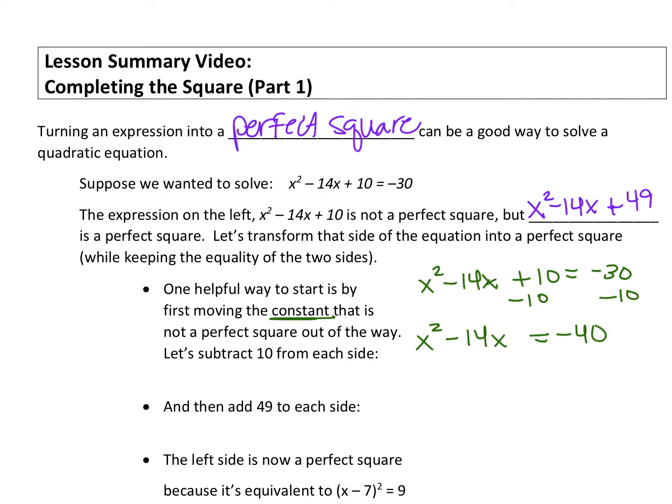So what we want to do here is create a perfect square on the left. To create a perfect square, when you have your linear term, if you take this negative 14 and divide it by 2, you get a negative 7. And then we want to square that. That's where that 49 is coming from. We're going to add 49 to both sides.